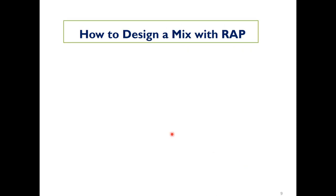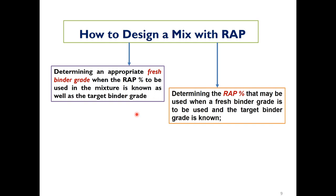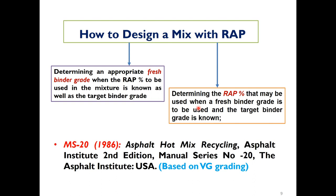Now, what we are going to discuss is how to design a mix with RAP. There are two possible cases: one where you need to determine the appropriate fresh binder grade and you know the RAP content and target binder grade, and another case where you want to determine the RAP percentage when you know the fresh binder grade and the target binder grade. We will discuss these two cases separately, and MS20 guidelines based on viscosity grade binders will be used.